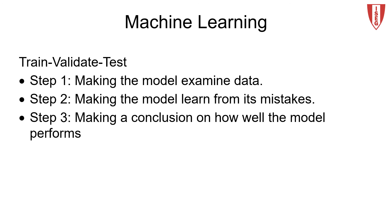The training data is used to make sure the machine recognizes patterns in the data. The cross-validation data is used to ensure better accuracy and efficiency of the algorithm used to train the machine. The test data is used to see how well the machine can predict new answers based on its training.